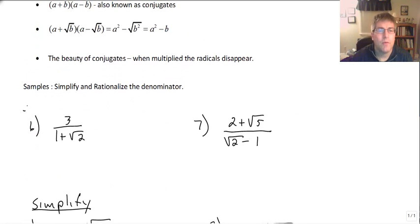Got a couple of samples here. We want to simplify and rationalize the denominator. So what we want to do here is because we have a binomial in the denominator, we cannot treat this like we did in the previous lesson. We can't treat this as a monomial and just multiply by the square root of 2 over square root of 2. So here's an example of what not to do.